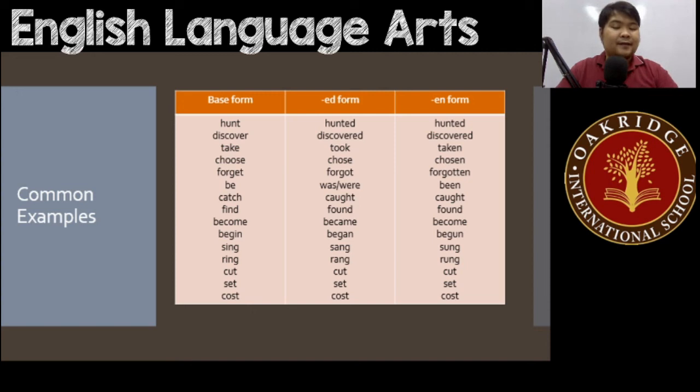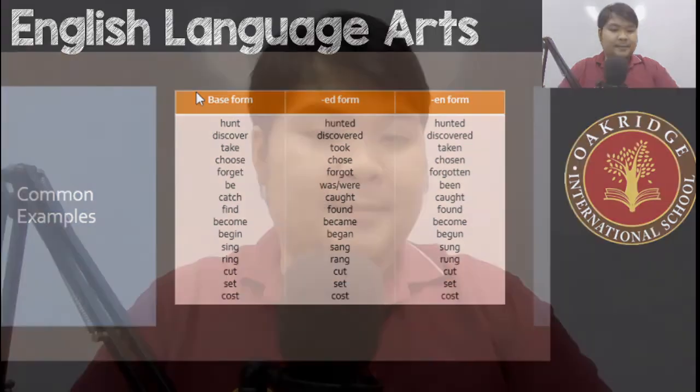Those are the different kinds of verbs in the en form, or in the past participle. That pretty much ends our topic for recognizing the past participle form of verbs.